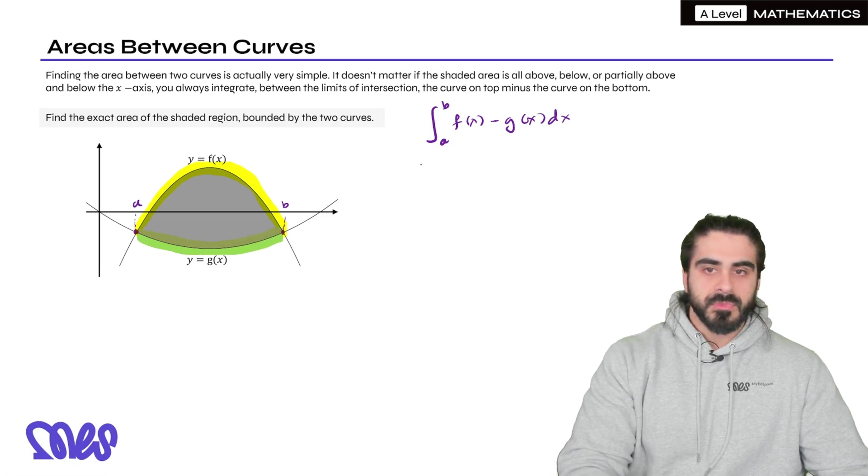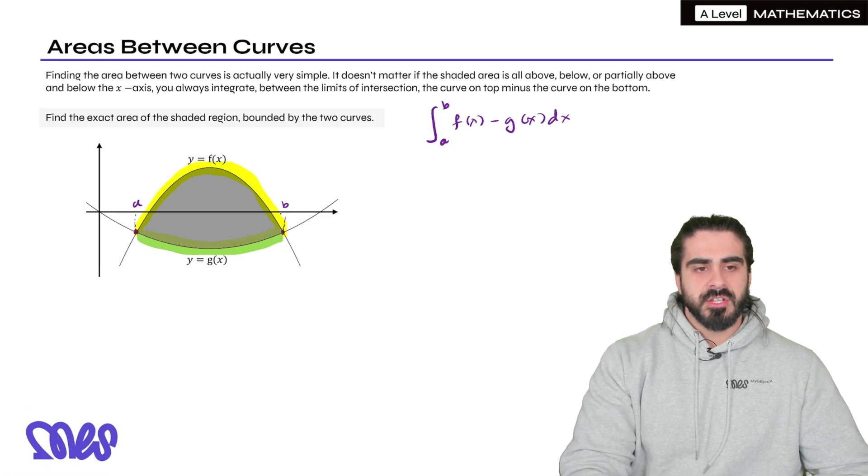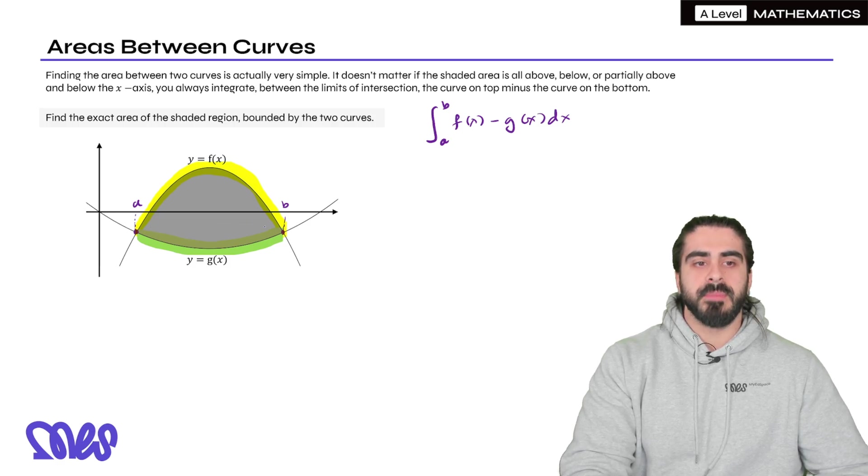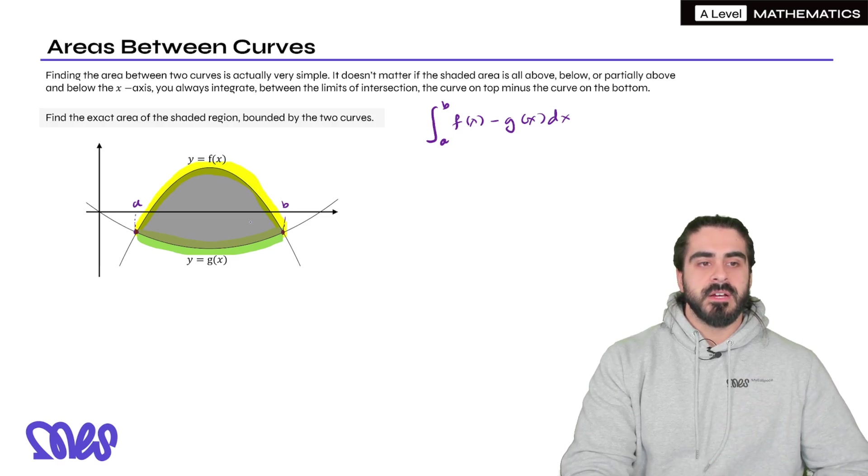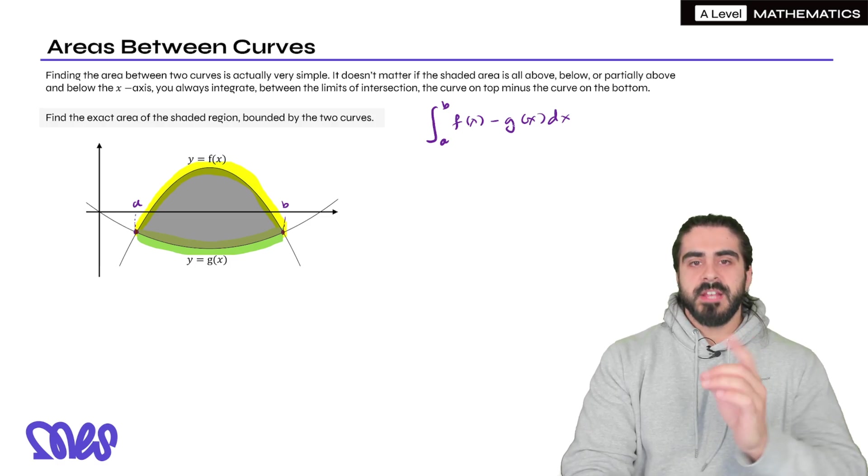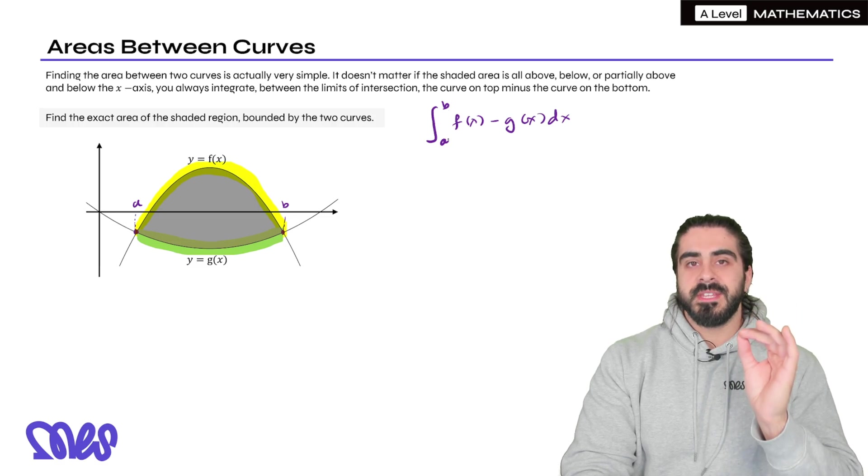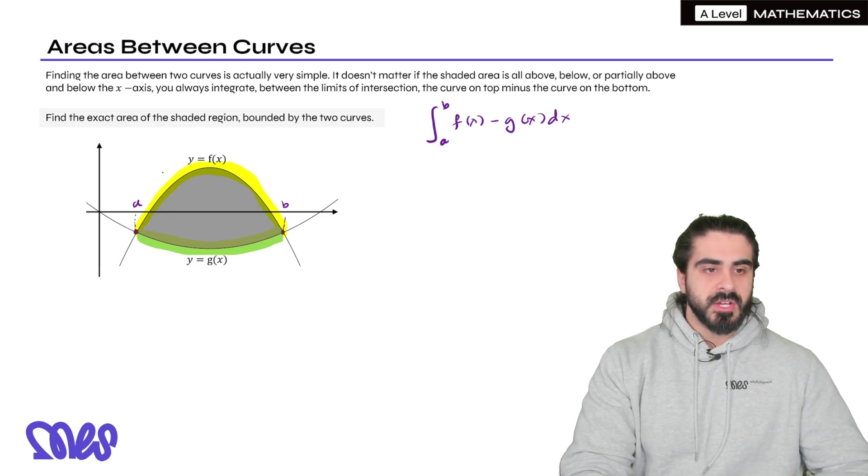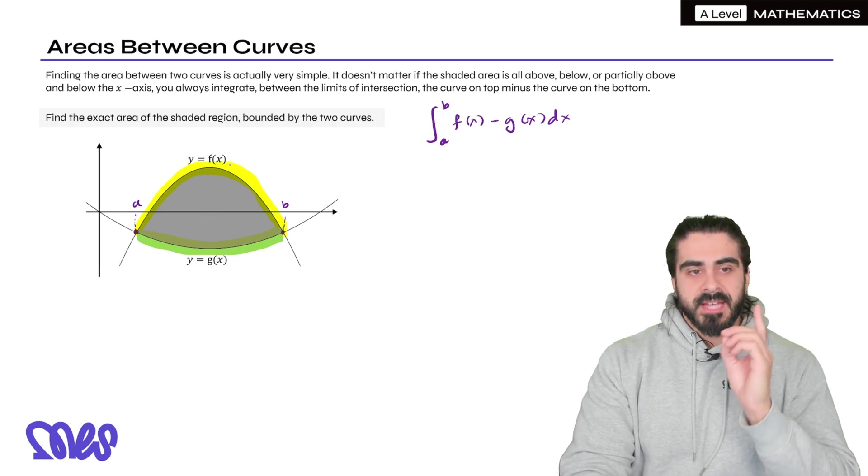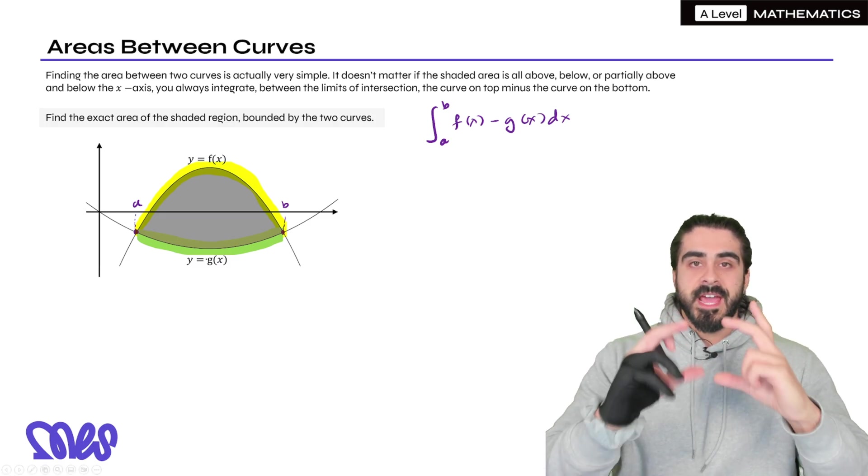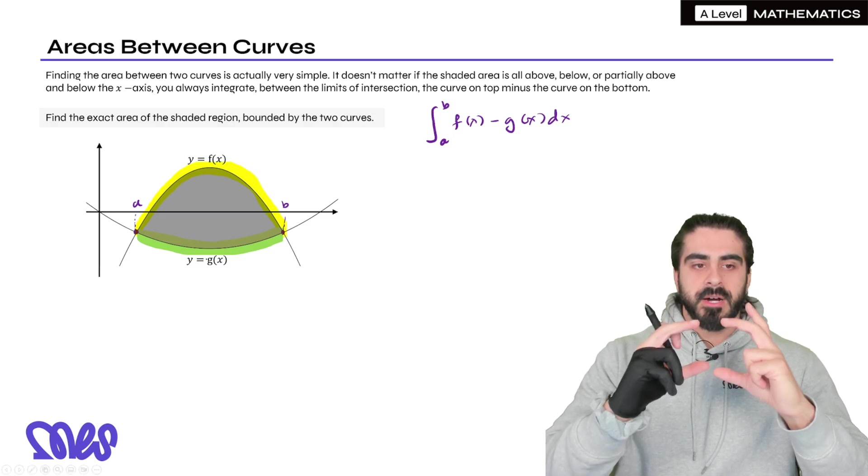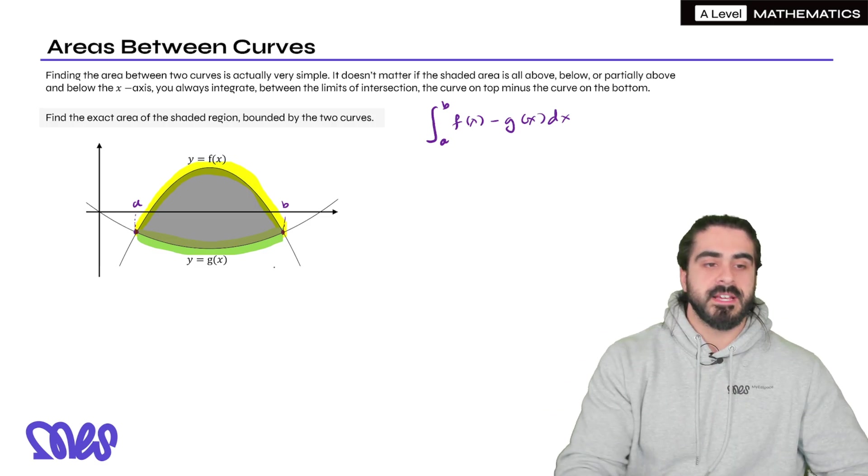So why is this the case? You might be thinking, well I thought if parts of the graph are below the axes it represents a negative area. Well let's see what happens. When you evaluate an integral and then you substitute in the limits you take away the curves. So what I'm gonna do here is I'm going to add a constant to both of these functions so that the area is still the same but the whole thing is above the x-axis.